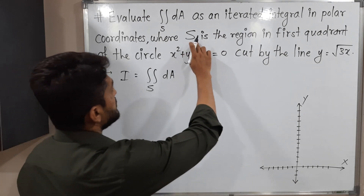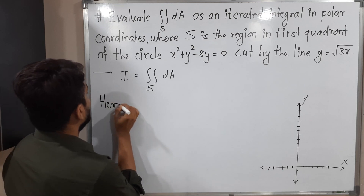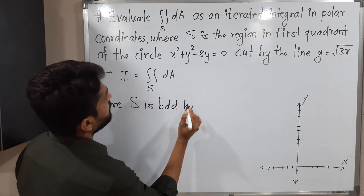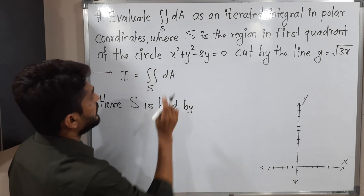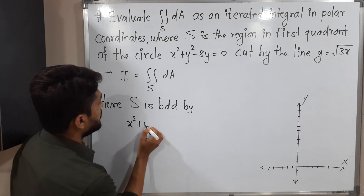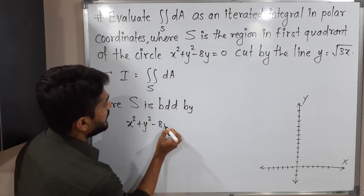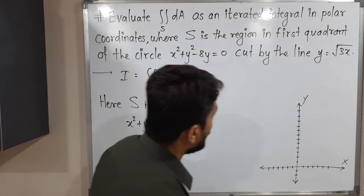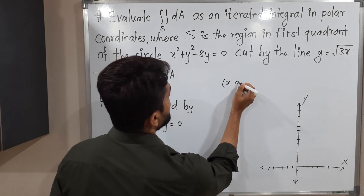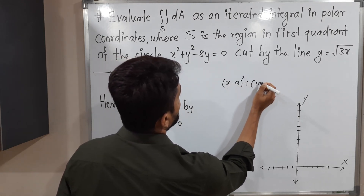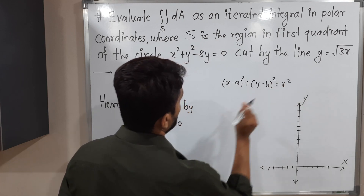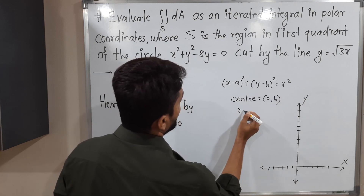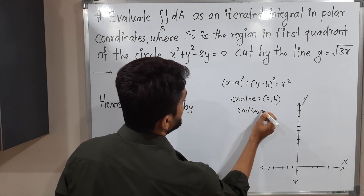S is bounded by a circle. They have given this equation of circle: x² + y² - 8y = 0. This is not in standard form. The standard form of equation of circle is (x - a)² + (y - b)² = r², where the center is (a, b) and radius is r.